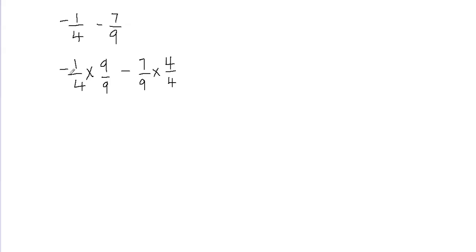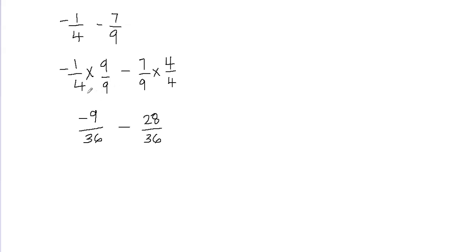Now we multiply numerator by numerator and denominator by denominator. Negative 1 times 9 gives negative 9 in the numerator, and 4 times 9 equals 36 in the denominator. Then we keep the minus sign, and multiply again: 7 times 4 gives 28, and 9 times 4 gives 36. We now have the same denominators — that is why we multiplied each fraction by the other fraction's denominator, so that we get a common denominator.